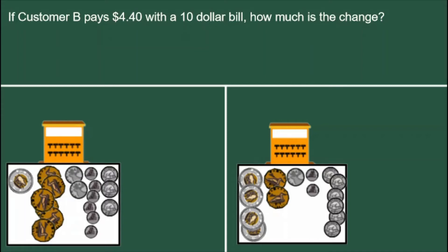Today's Daily Dose of Math is an exercise where customer B is paying for an item, a carton of milk, with a $10 bill. The cost of the item is $4.40. We need to know how much change to give, and we're going to practice giving change in different ways.